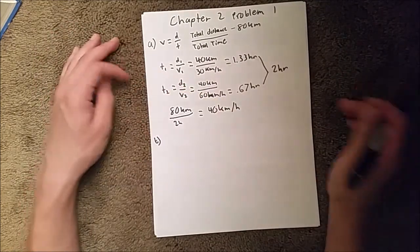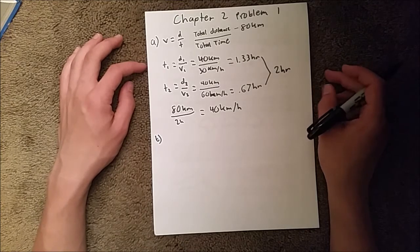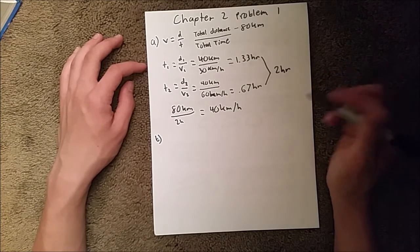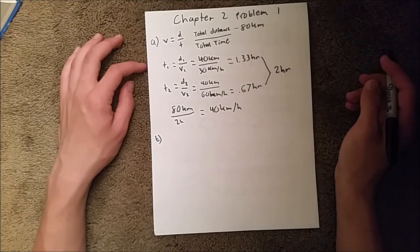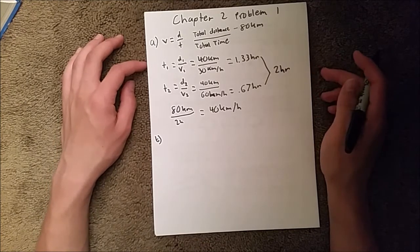And for Part B, we are asked to find the average speed. And so, velocity is directional, so the direction in which you're moving matters, but speed is just the magnitude of your velocity.